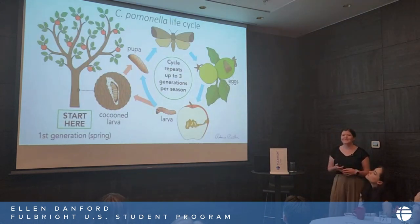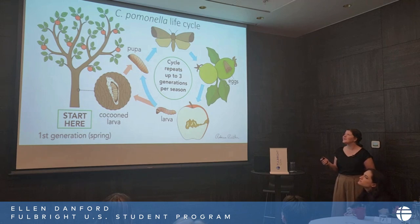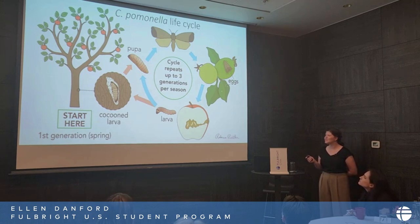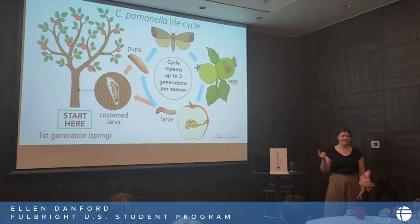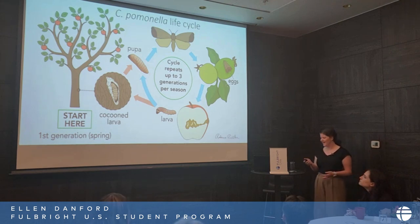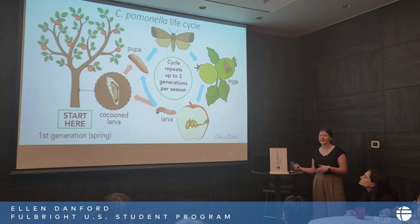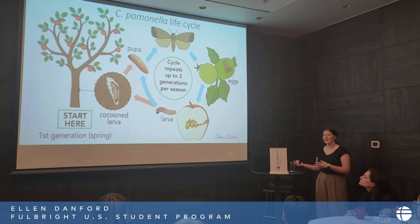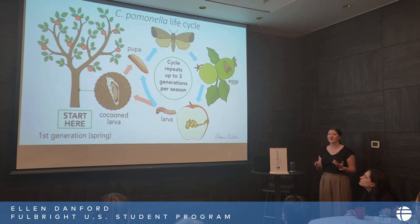Unfortunately, the codling moth reproduces really well. During a growing season, larvae that have overwintered in the bark of your tree will pupate, turn into adult moths, lay eggs on your apples, those larvae burrow into the apples, grow up a bit, then pupate and do it again — and they can repeat this cycle three times a season. This means that if you have some codling moths, you already have a lot. And because it repeats multiple times a season, if you want to use pesticides, you need distinct applications for each generation. You also need to know where to spray because they can burrow into tree bark, the ground, or leaf litter — they're incredibly versatile.